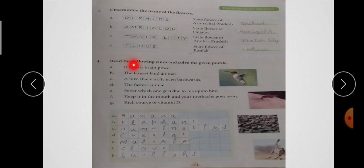Fourth पे आइये - Read the following clues and solve the given puzzle. की clue दिये गए हैं, इनको read करना है. और जो नीचे puzzle दी है, इसको solve करना है. A है - It boost brain power. की हमारी brain की जो power है, उसको कौन boost करता है? Banana. तो क्या लिखेंगे? B-A-N-A-N-A, Banana.